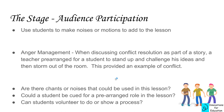The audience participation hook uses students to make noises or motions to add to the lesson. This was called anger management: students were discussing conflict resolution as part of a story. The teacher pre-arranged for a student to stand up and challenge his ideas — none of the other kids knew — and then the student stormed out of the room. This served as an example of conflict. Ask yourself: are there chants or noises you could use? Could a student be cued for a pre-arranged role? Could students volunteer to show a process?